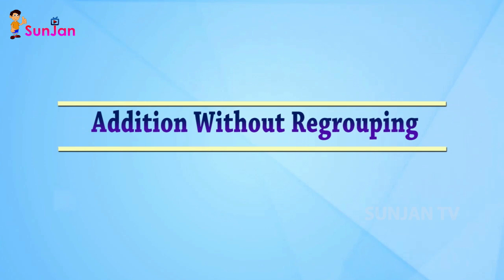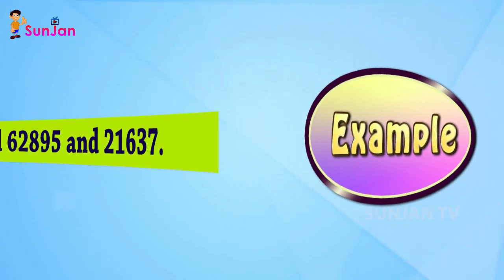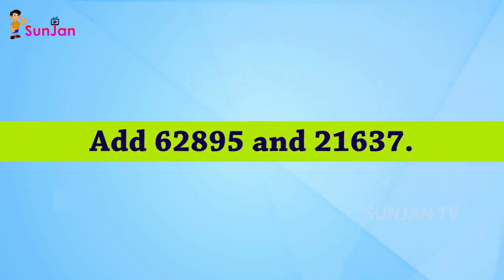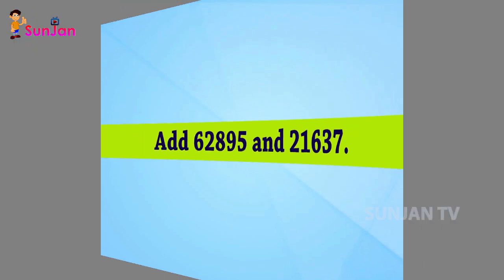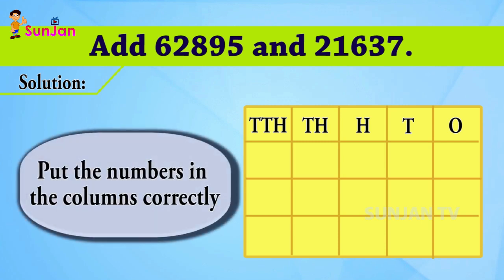Addition without regrouping. Add 62,895 and 21,637. Solution: Put the numbers in the columns correctly.